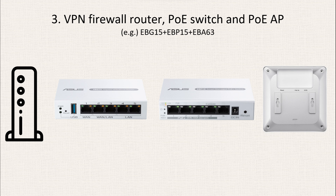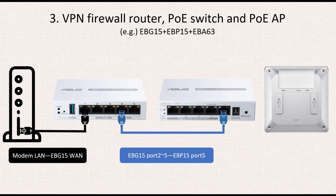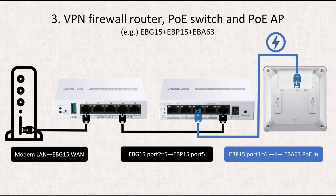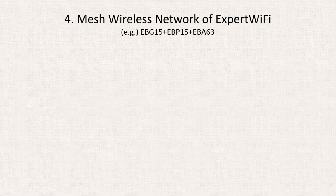Number three: the configuration of VPN Firewall Router, PoE Switch, and PoE AP, taking EBG15, EBP15, and EBA63 as examples. First, connect the modem's LAN to the WAN of EBG15. Second, connect either of LAN ports 2 to 5 of EBG15 to port 5 of EBP15. Third, establish another connection by linking PoE+ ports 1 to 4 of EBP15 to the PoE input of EBA63. The setup will be completed.